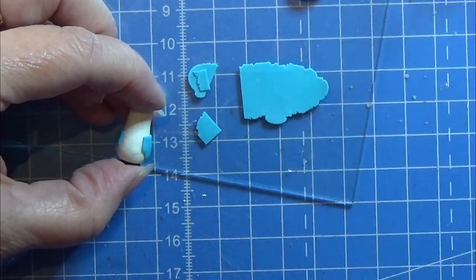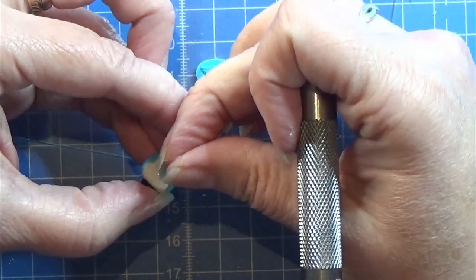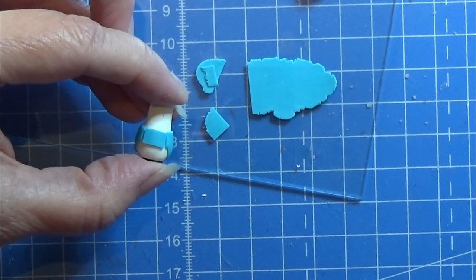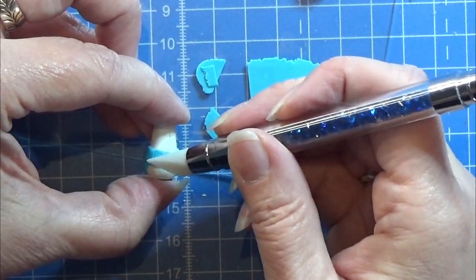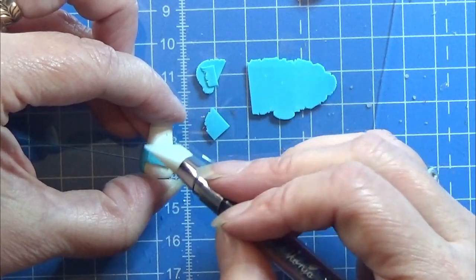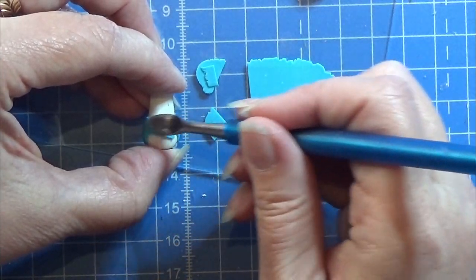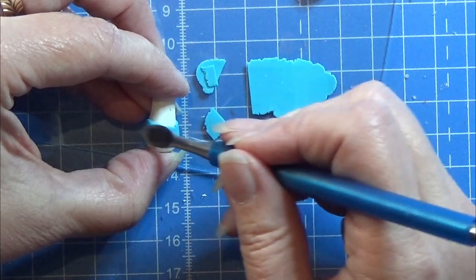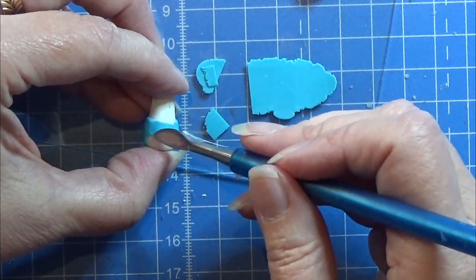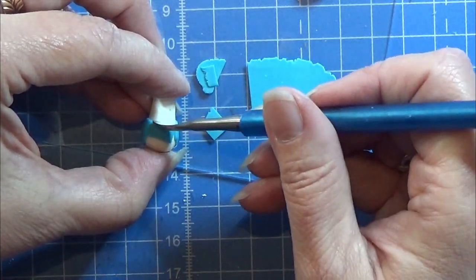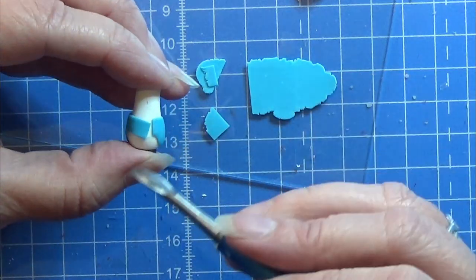I'm just going to take a piece of my clay, roll it out through the pasta machine in a very thin setting, and cut a tiny piece that fits in between the two parts here. I'm smoothing out the connection between the parts so you don't see that this is an added-on piece.